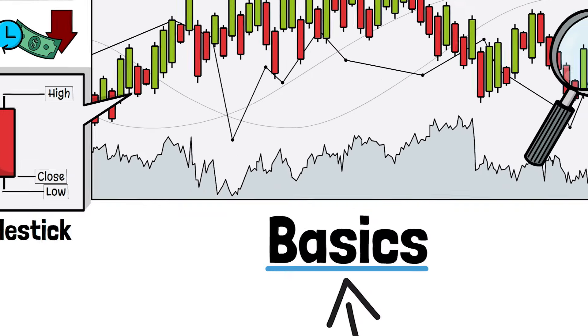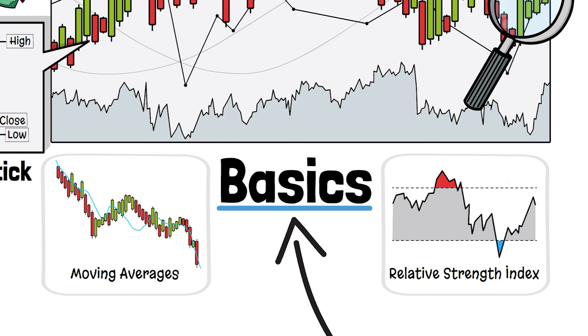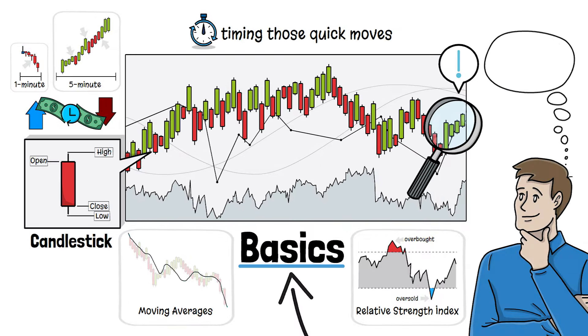To help you spot trends, two tools you'll definitely want are moving averages and the relative strength index. Moving averages smooth out price data to help you see where the price is trending, while RSI helps you spot overbought or oversold conditions. These are essential for making fast, informed decisions.